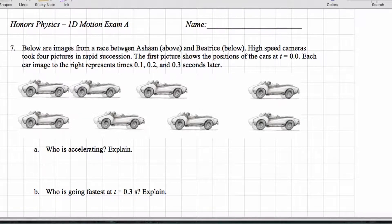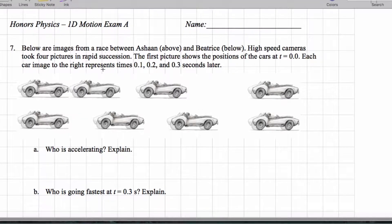All right, so here we are with this car. It's traveling. Two different— oh, two cars. So we have Ashan and Beatrice.